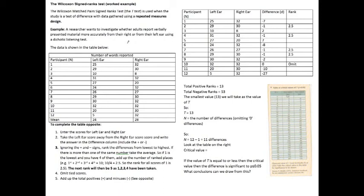This is a copy of the handout that you were given, and it describes the Wilcoxon signed ranks test. It's a worked example of a researcher who wants to investigate whether adults report verbally presented material more accurately from the right or from the left ear using a dichotic listening test.